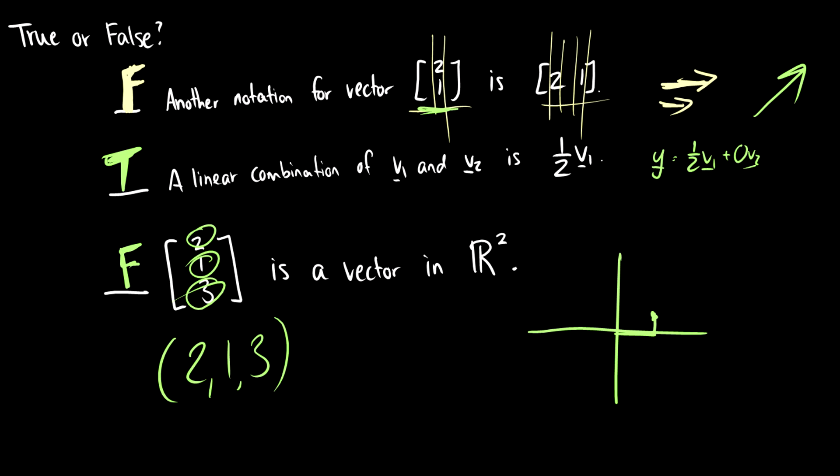So we can go two over, we can go one up. Then we're saying, okay, I have to come three out of the page. I can't do that in two dimensions. So that is linear combinations.